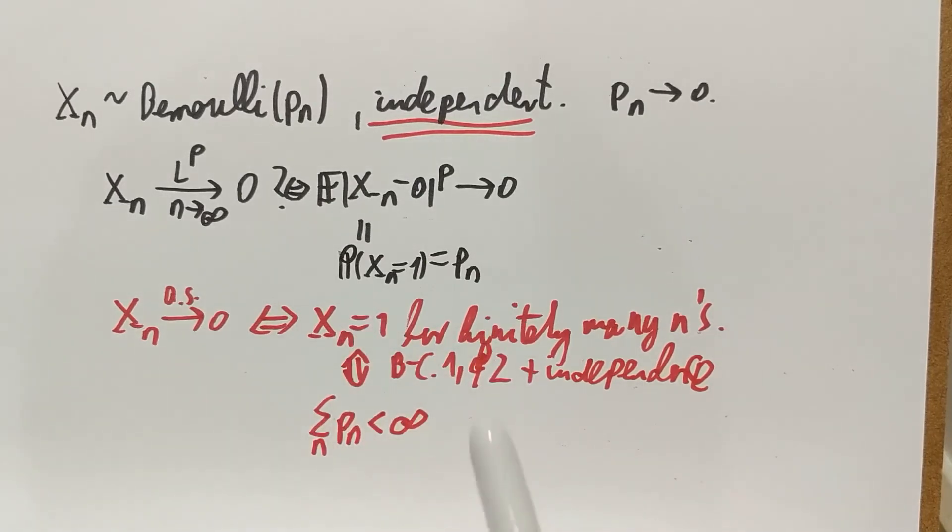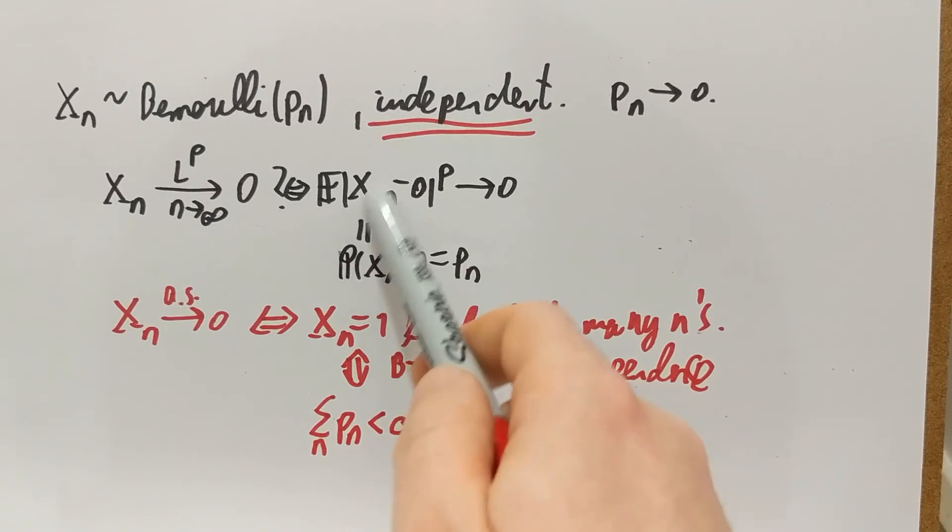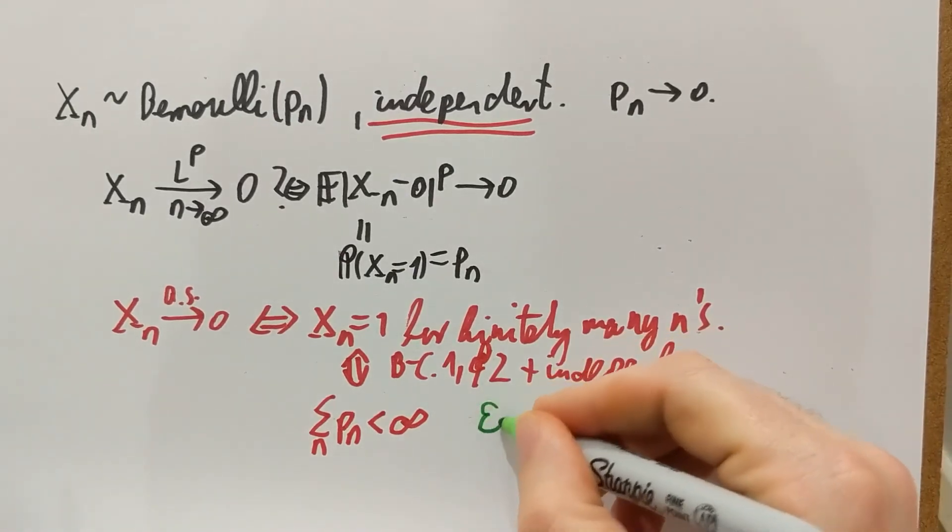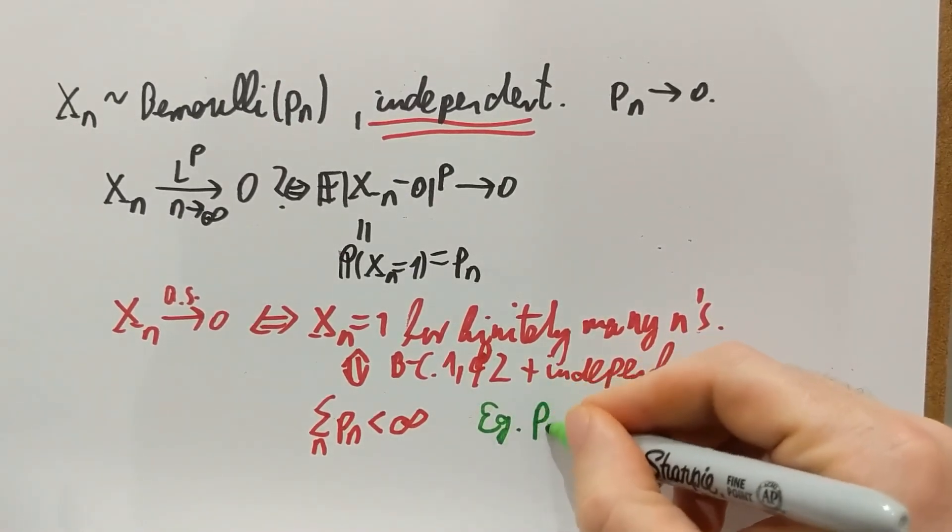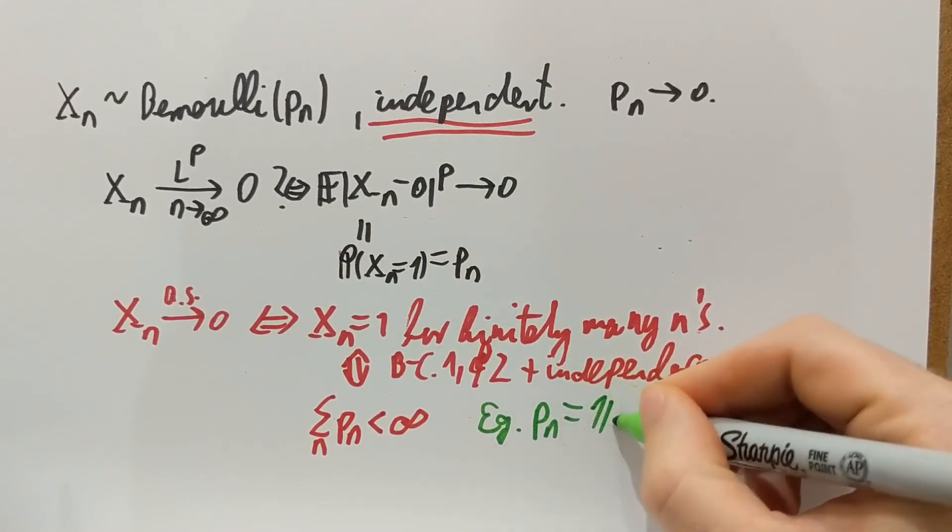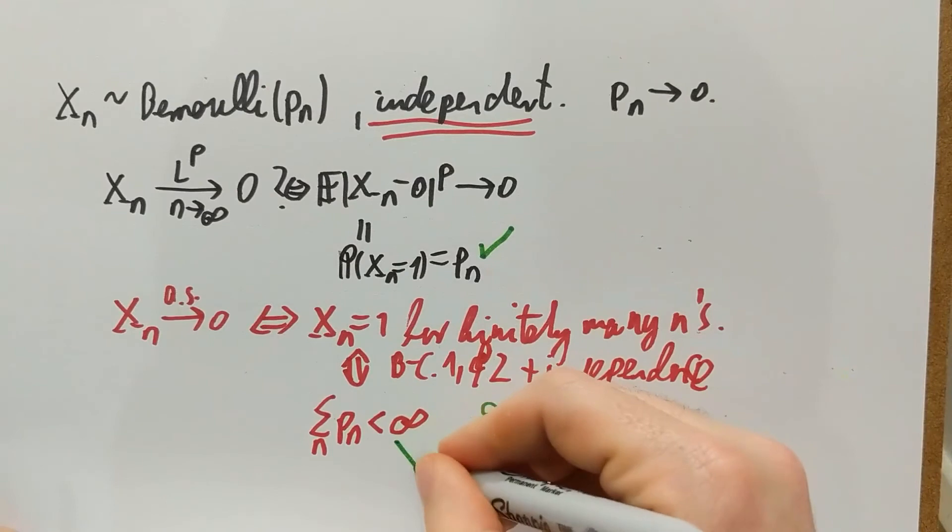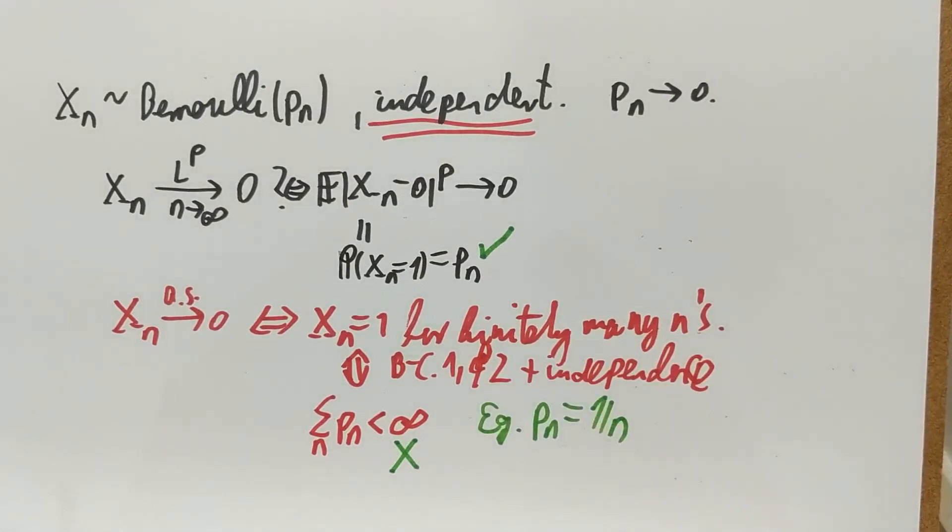Now is there a difference between Pn going to zero and Pn being summable? Yes, there is a difference. For example, the sequence Pn equals one over n does go to zero, but it does not sum to a finite number.